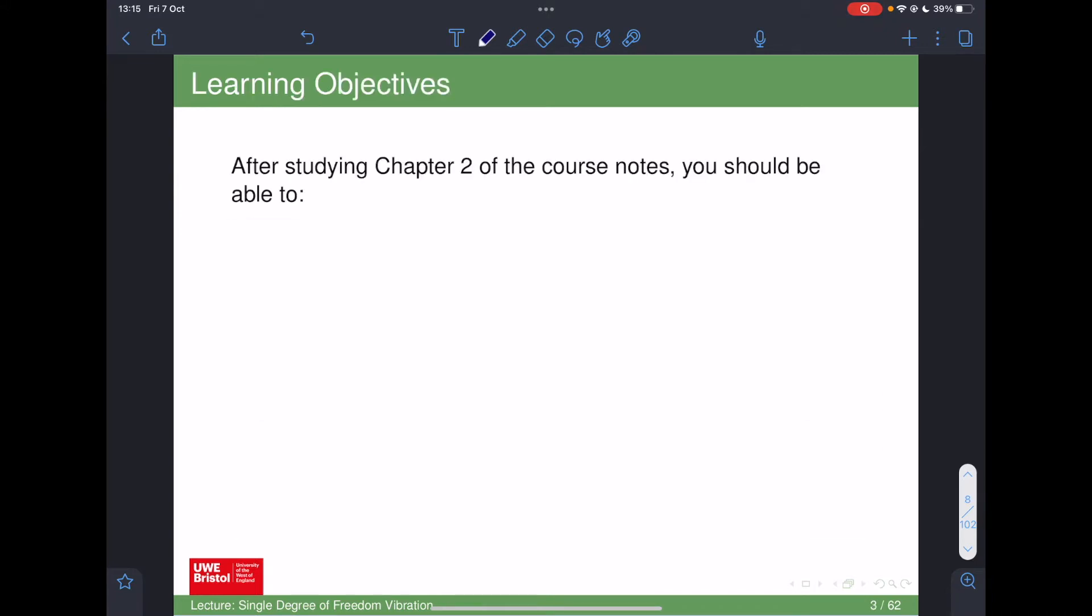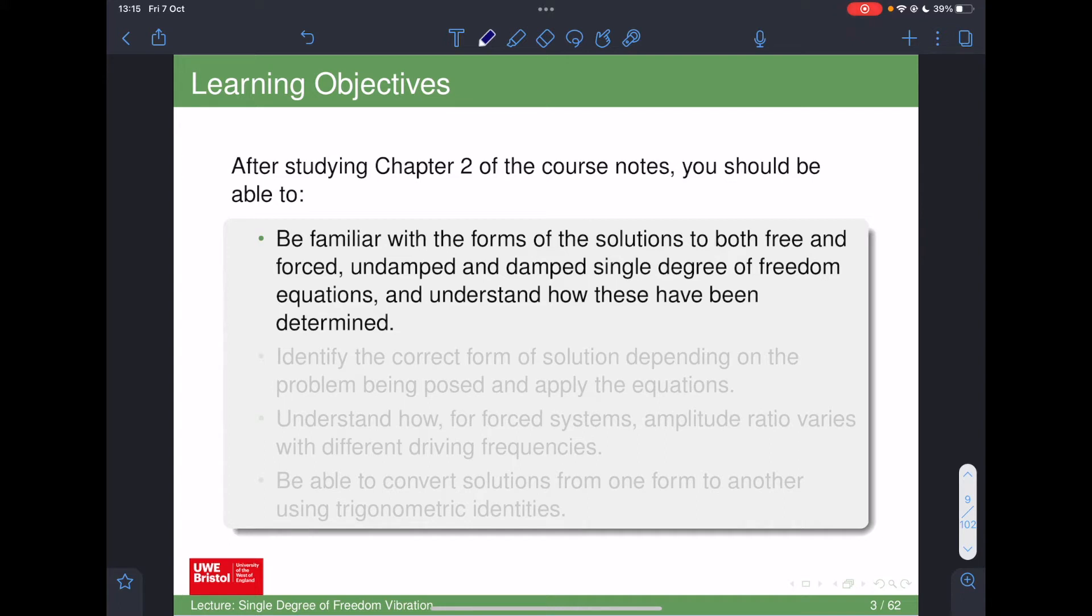The learning objectives for chapter 2 are to become familiar with the forms and solutions for both free and forced, undamped and damped single degree of freedom systems. Four equations, basically, depending on what sort of system you're dealing with, and have an understanding or at least familiarity with how they've been derived. I'm not going to be assessing your deriving them, so I'm not going to ask how you derive a particular equation—it's mainly about understanding where they come from.